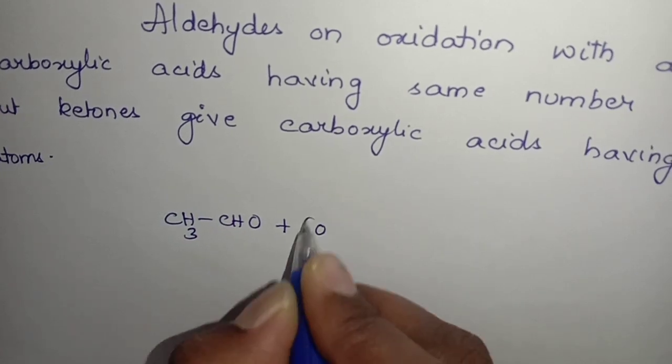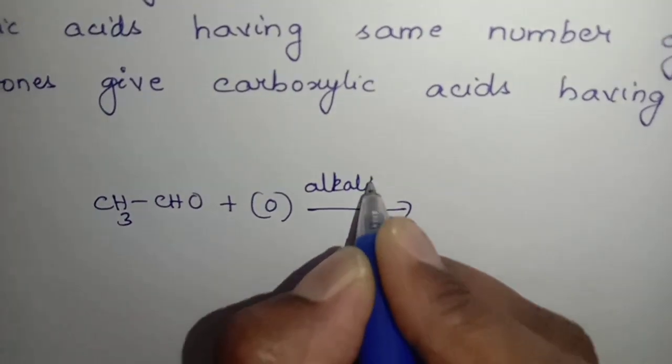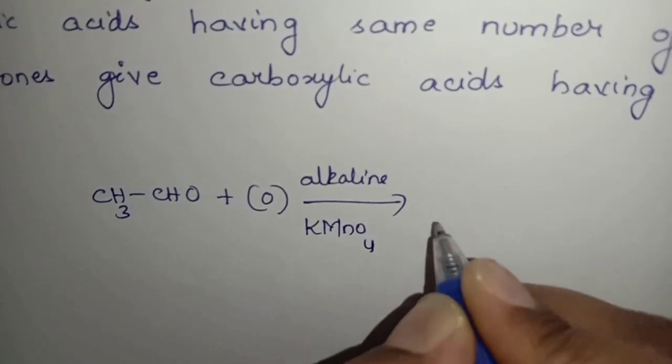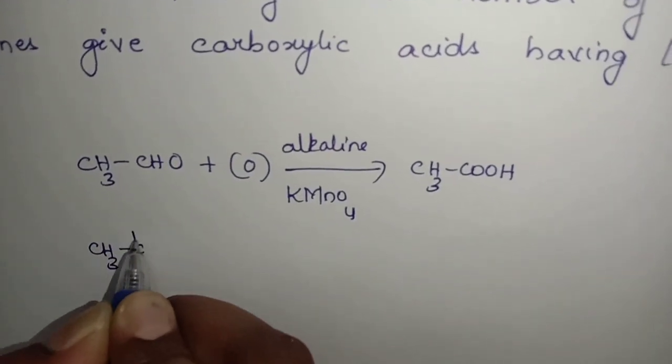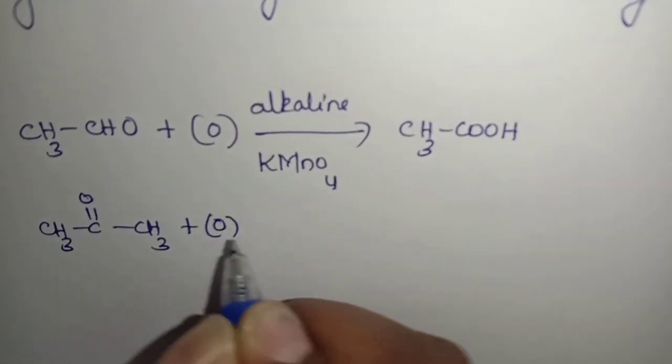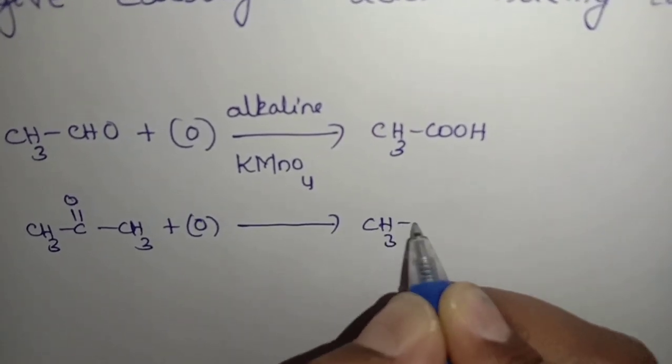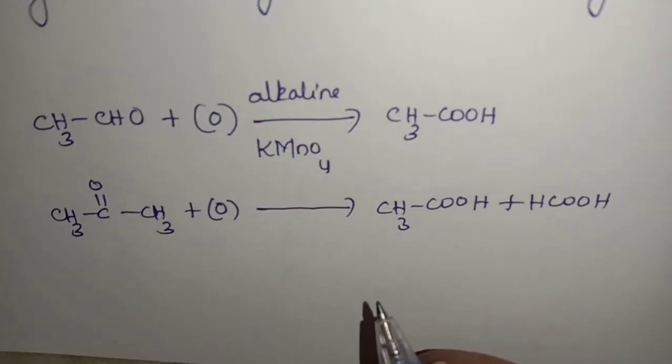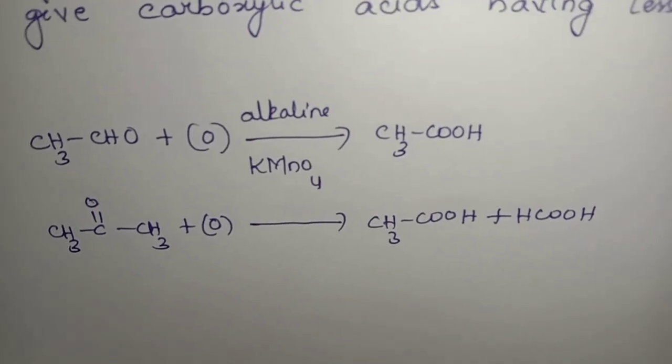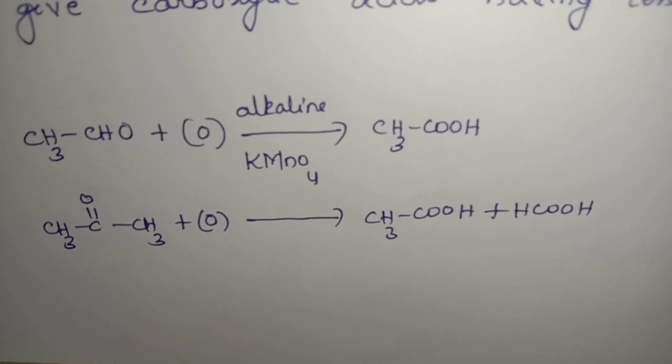I am writing the reactions here. CH3CHO on oxidation in the presence of alkaline KMnO4 gives CH3COOH, whereas ketones CH3COCH3 on oxidation gives CH3COOH plus HCOOH. This we have already learned in the previous videos. Just for your information I am writing the reactions of aldehydes with Fehling's reagent.